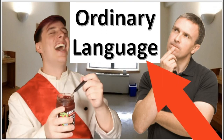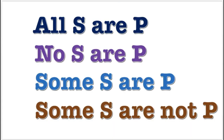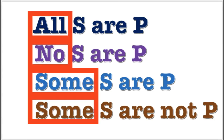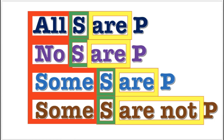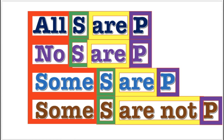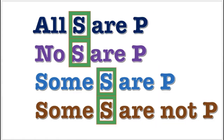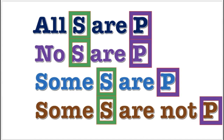Now to put your friend's propositions into standard form, you need to reconstruct them so they have a quantifier, a subject term, a copula, and a predicate term. The subject term and predicate terms must include a plural noun or pronoun that refers to the respective class.